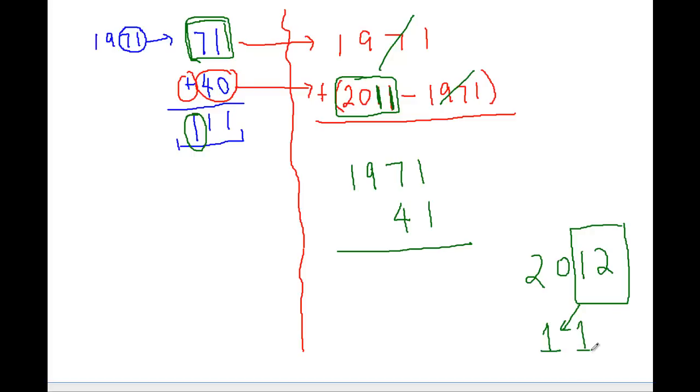So next year, the same trick will become 112, and the year after that, you guessed it, it's going to be 113, and the year after that, 114.